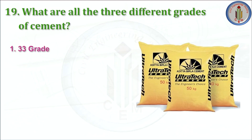What are the three different grades of cement? 33 grade, 43 grade, and 53 grade. 33 grade cement is not used for concrete grades above M20 — up to M20, we can use 33 grade cement. 43 grade cement is used for PCC and RCC up to M30 grade of concrete, flooring, plastering, and masonry works. 53 grade cement can be used above M30 grade of concrete — it is mainly used for high-rise buildings, industrial buildings, precast concrete, and prestressed concrete.